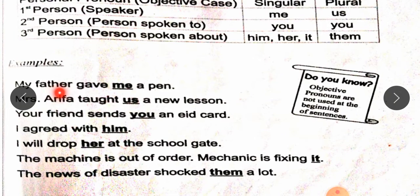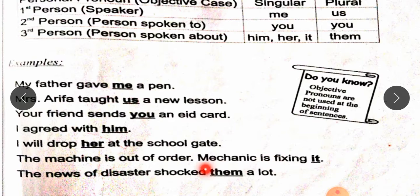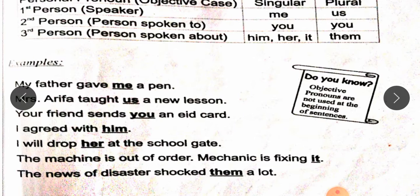For example: My father gave me a pen. Mrs. Arifan taught us a new lesson. Your friend sends you an Eid card. I agreed with him. I will drop her at the school gate. The machine is out of order — the mechanic is fixing it. The news of disaster shocked them a lot. These are examples of objective case. Objective pronouns are used in the middle or at the end of the sentence.